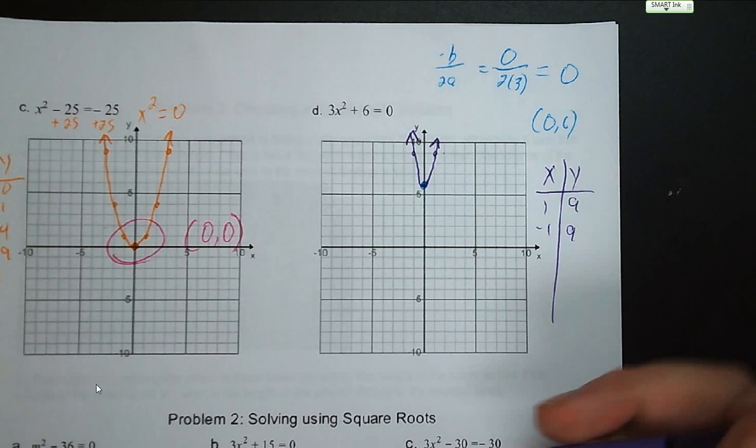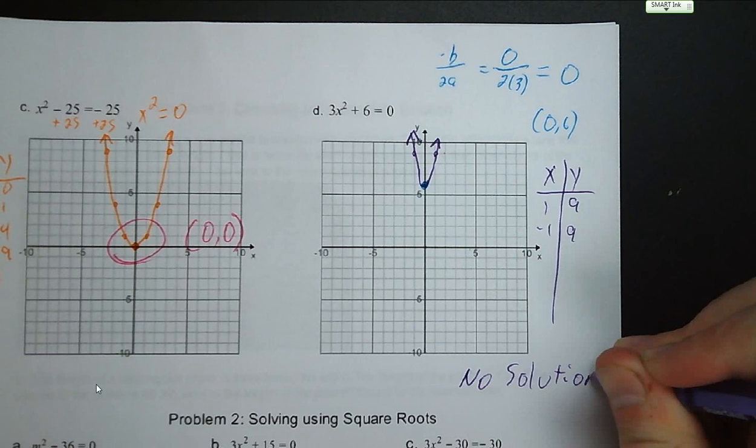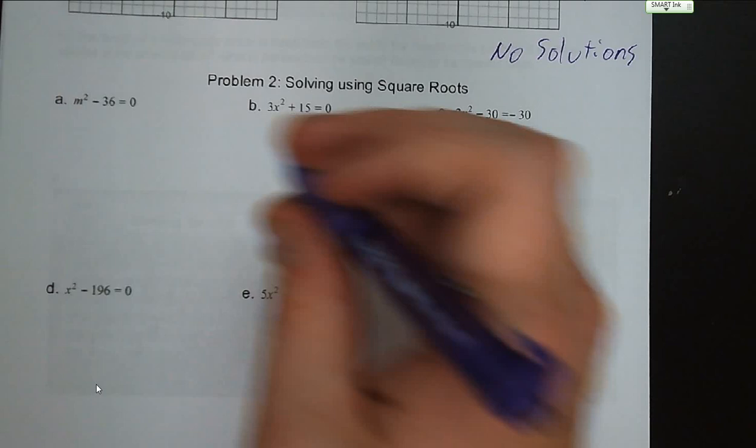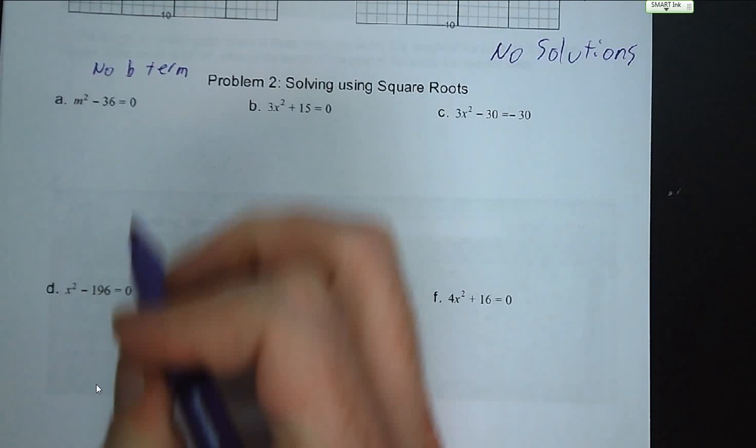Problem number two: solving using square roots. This is going to be useful when there is no b term. If there is no b term, we're going to be able to solve using square roots.